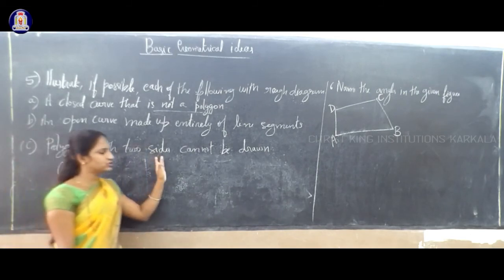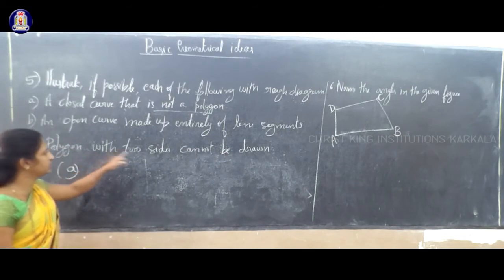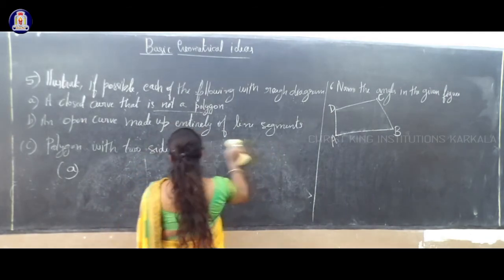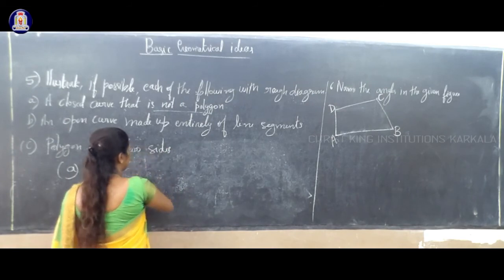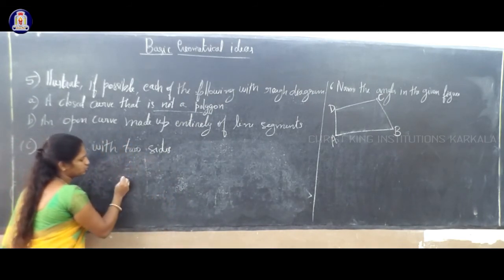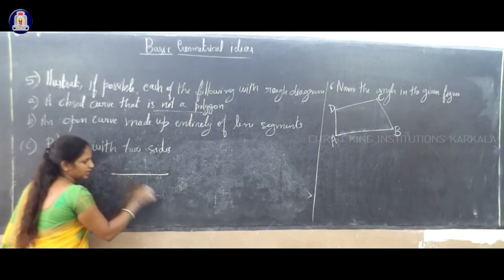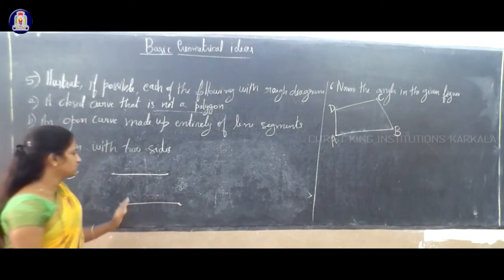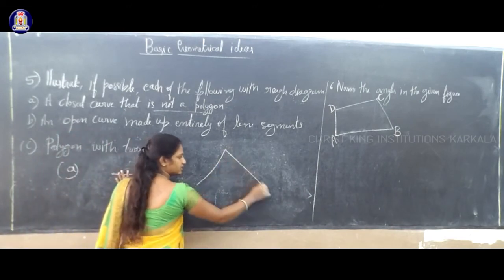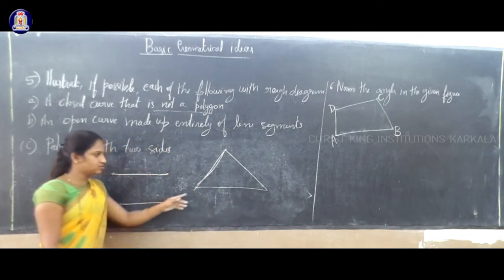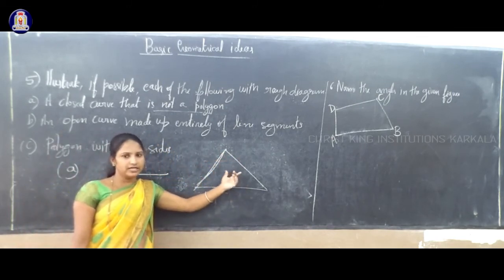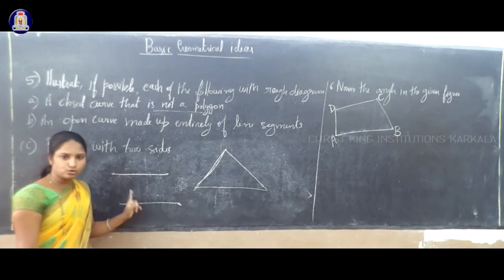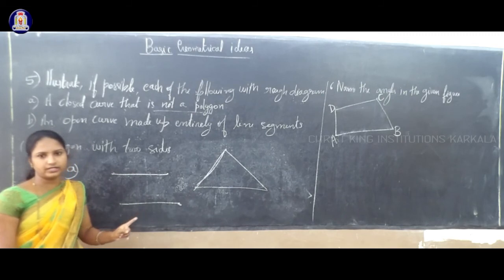Third one: polygon with two sides cannot be drawn. The question is a polygon with two sides. Can you get a polygon with two sides — one side and another side? No. We can say that polygon with two sides cannot be drawn.